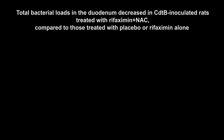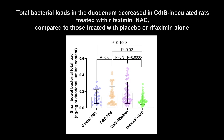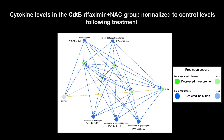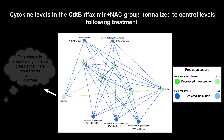Total bacterial loads in the duodenum decreased in CDTB-inoculated rats treated with Rifaximin plus NAC compared to those treated with placebo or Rifaximin alone. Cytokine levels in the CDTB Rifaximin plus NAC group normalized to control levels following treatment.